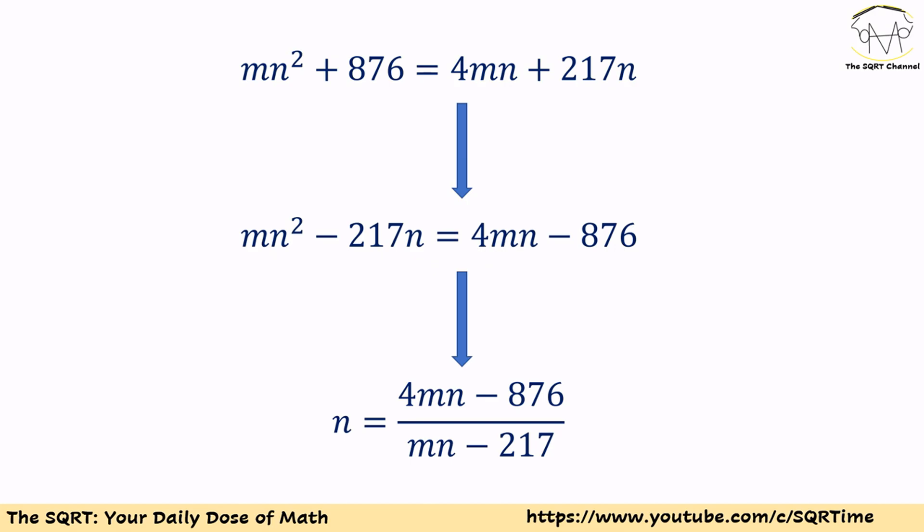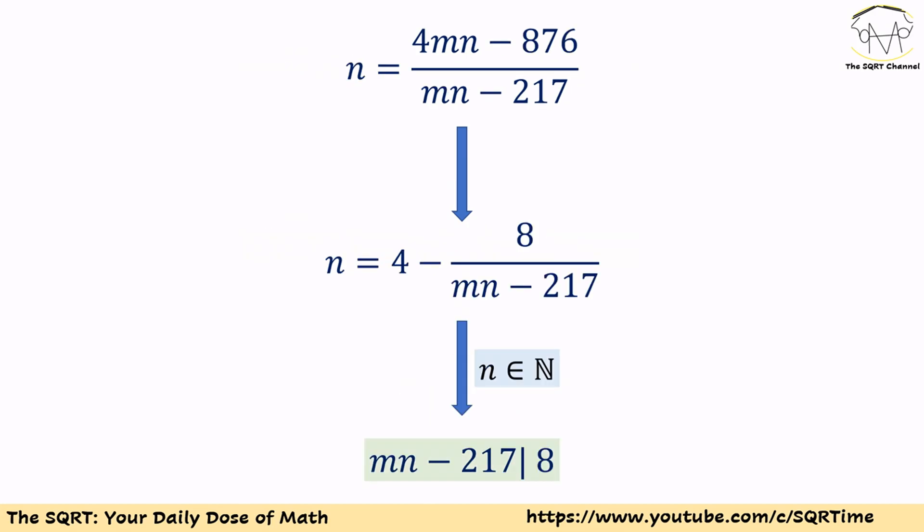Now we can factor out n from the left hand side and then we will have n = (4mn - 876)/(mn - 217). Let's simplify it further. We have 4mn in the top of this fraction and mn in the bottom, so we are going to divide top and bottom and then we will have n = 4 - 8/(mn - 217).